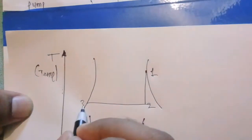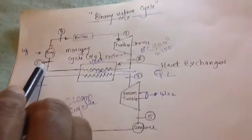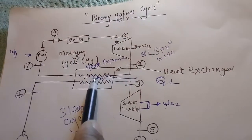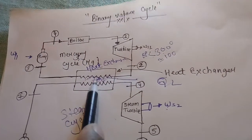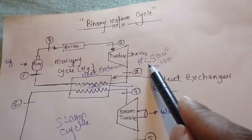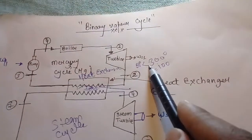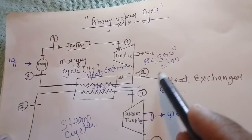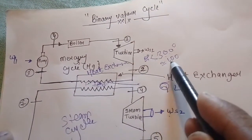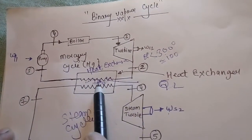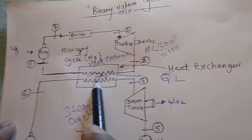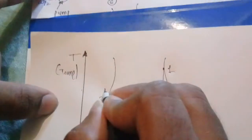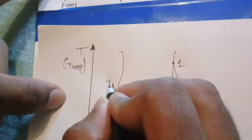From 2 to 3 — this point is 2 and this is 3 — 2 to 3 is the heat rejected out from the heat exchanger of the mercury cycle. As you know, the boiling point of mercury is about 300 degrees centigrade or more, and for water it is approximately 100 degrees centigrade, because there is some impurity contained in the heat exchanger.